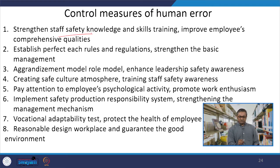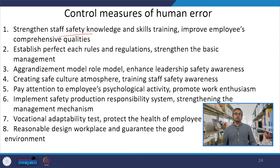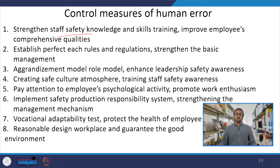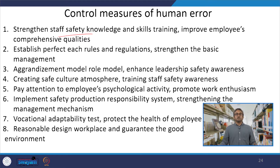One control measure is strengthening the staff safety knowledge. If we can strengthen staff safety knowledge and skill training, this improves the employee's comprehensive quality. If this would have been done at the Chernobyl nuclear power plant, we may have been able to avoid such a big human disaster. Similarly, if safety knowledge and skill training had been given at the Bhopal gas tragedy, we would have avoided that gas leak as well. Lack of safety knowledge and skill training actually results in human error.